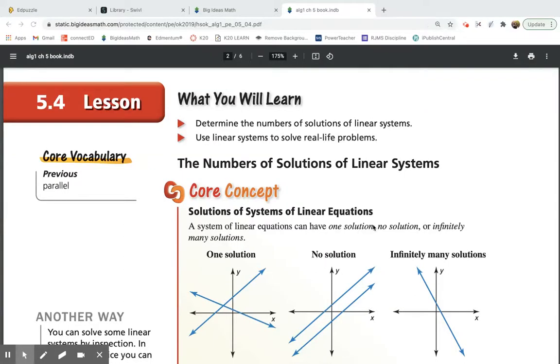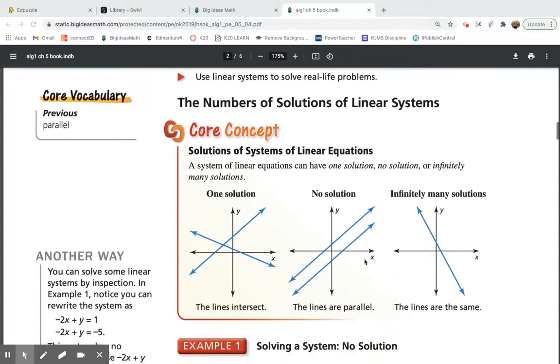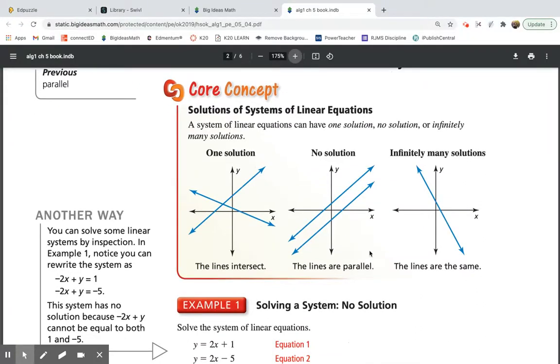Okay, lesson 5.4, solving special systems of equations. So I told you we'd be learning three different ways, and we have - graphing, substitution, and elimination. So now when we look at special systems of equations, they just tell you basically solve them. So when we're doing that, we get to choose which of those three ways to use. But before we really get into this lesson, I want you to copy these three graphs down and just write the word that's above them and then the line below them.